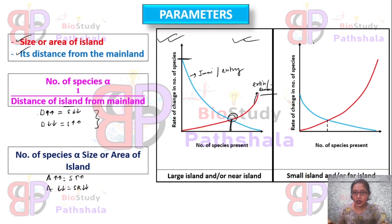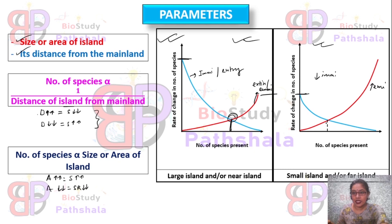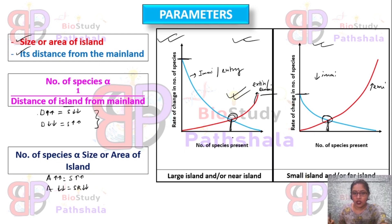The second graph shows a lower immigration rate and a higher extinction rate — that means fewer species are entering that particular island while more species are going extinct. These two curves intersect at a point showing a lower number of species compared to the first graph. So the first graph represents either a large island or a near island, while the second graph is for a small island or a far-situated island.